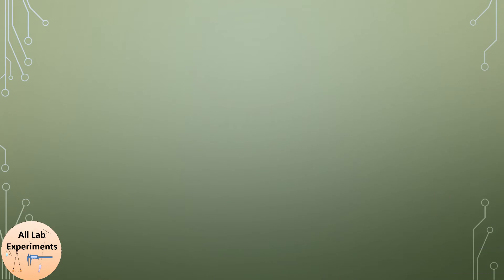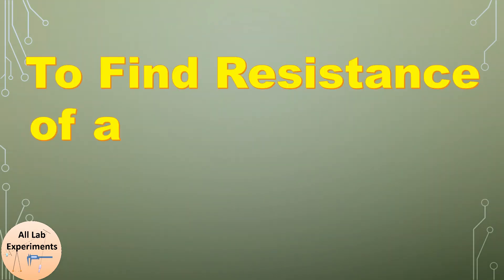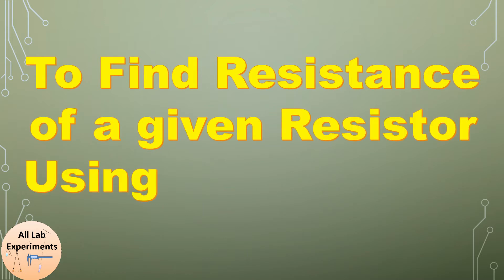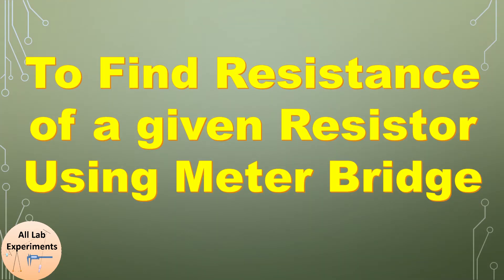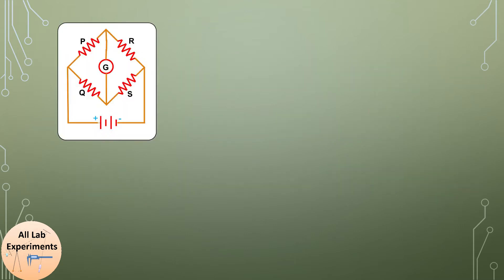Hello friends, today we are going to find the resistance of a given resistor using meter bridge. Before starting this experiment, let us understand its principle. We have this circuit diagram of Wheatstone bridge and the basic principle of this experiment is that the galvanometer doesn't show any deflection when the value of resistances follow this particular ratio.